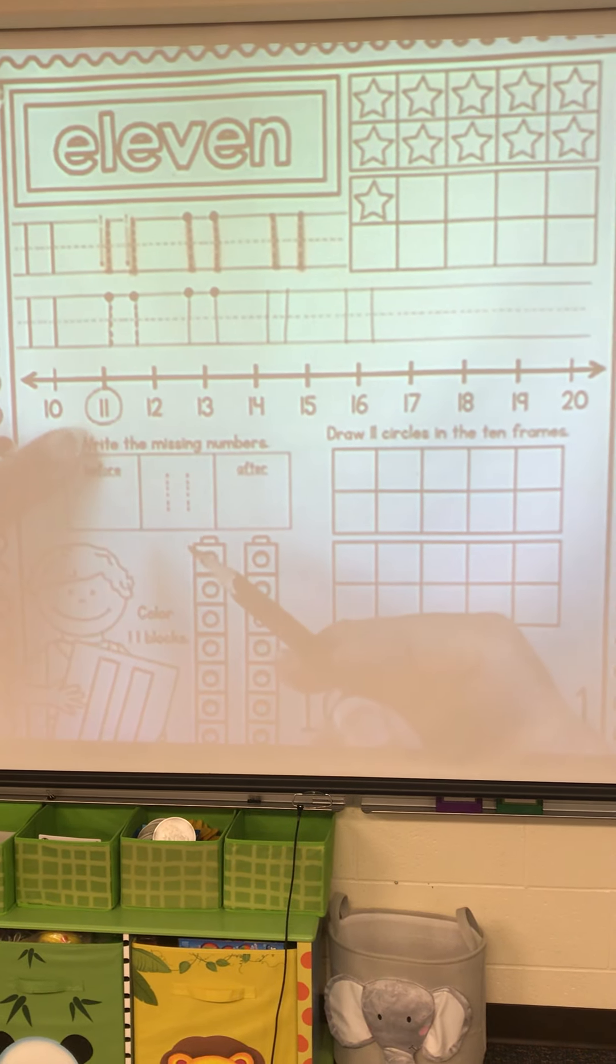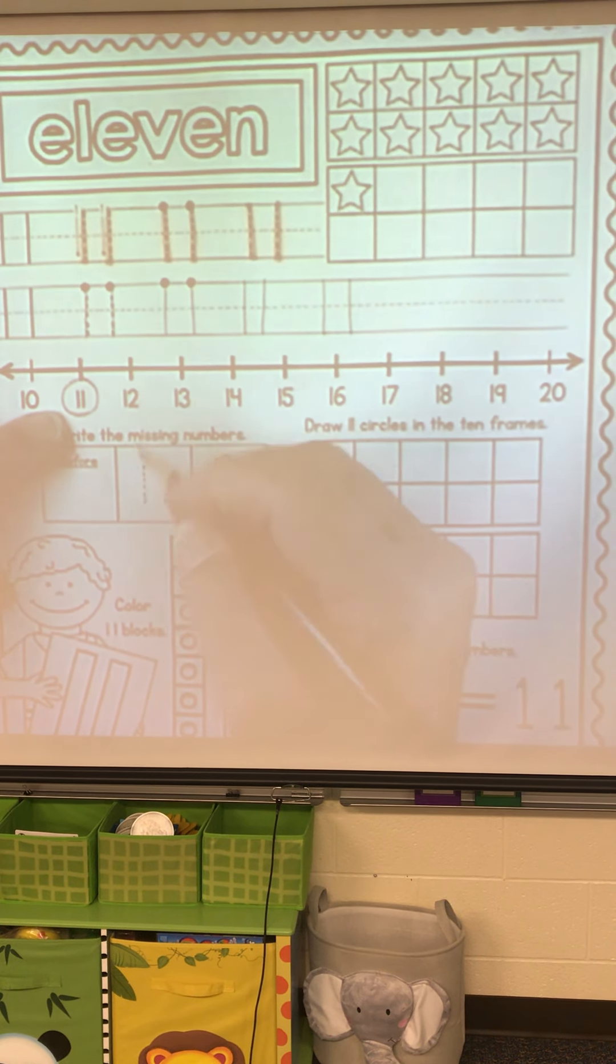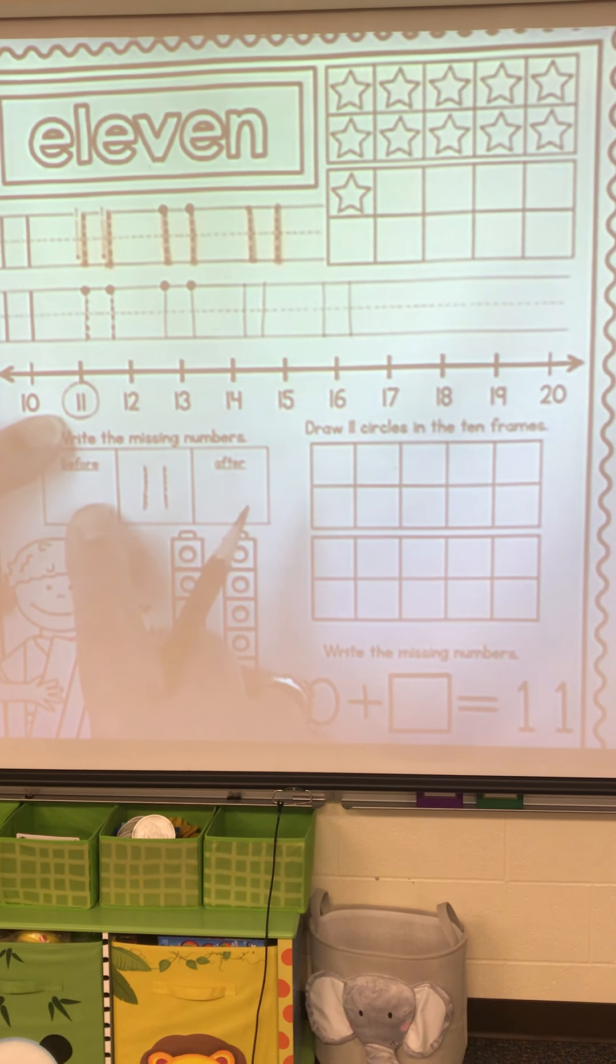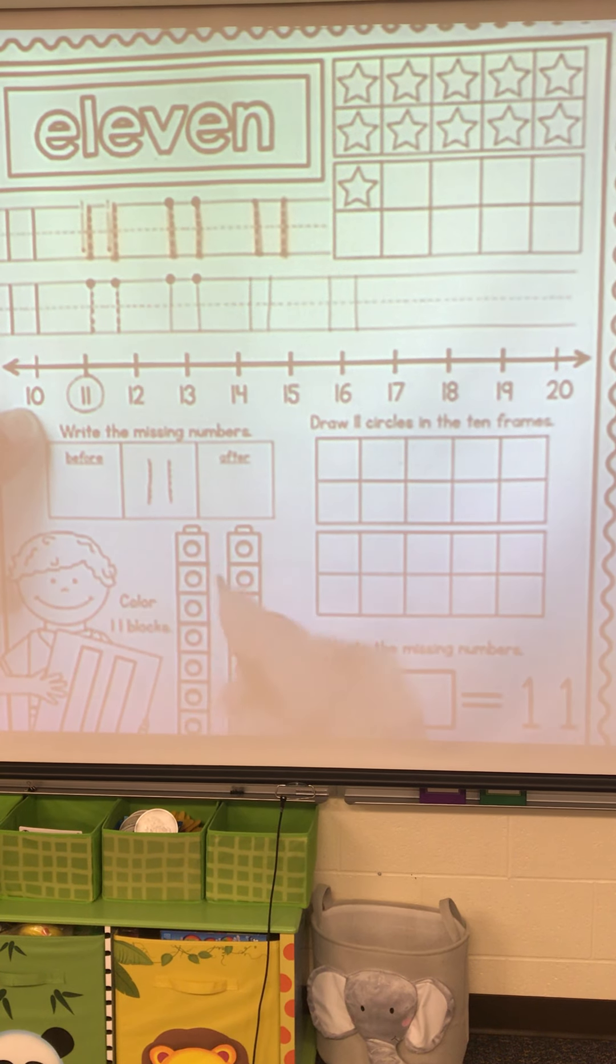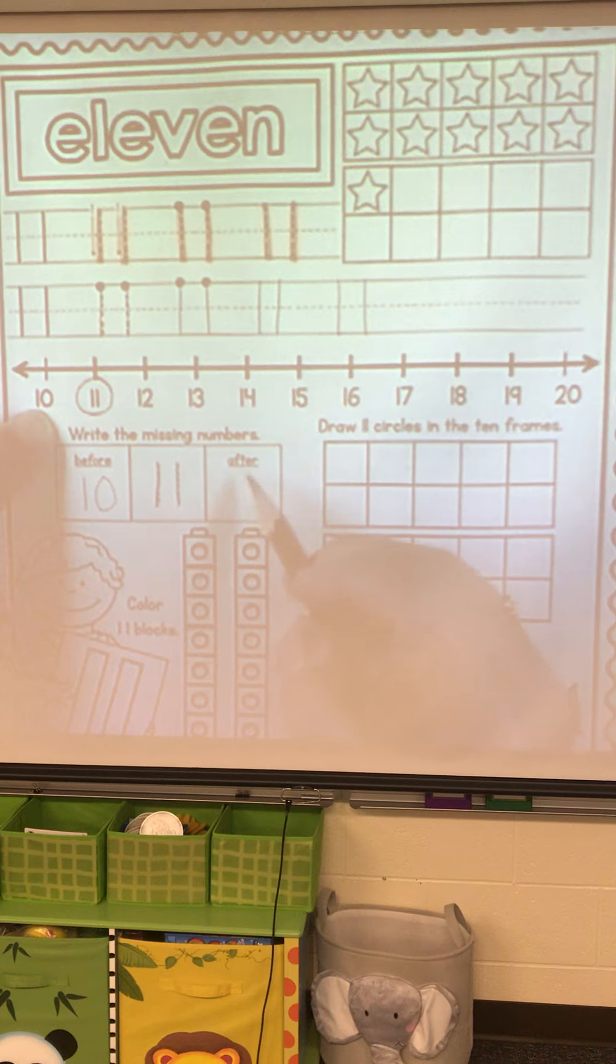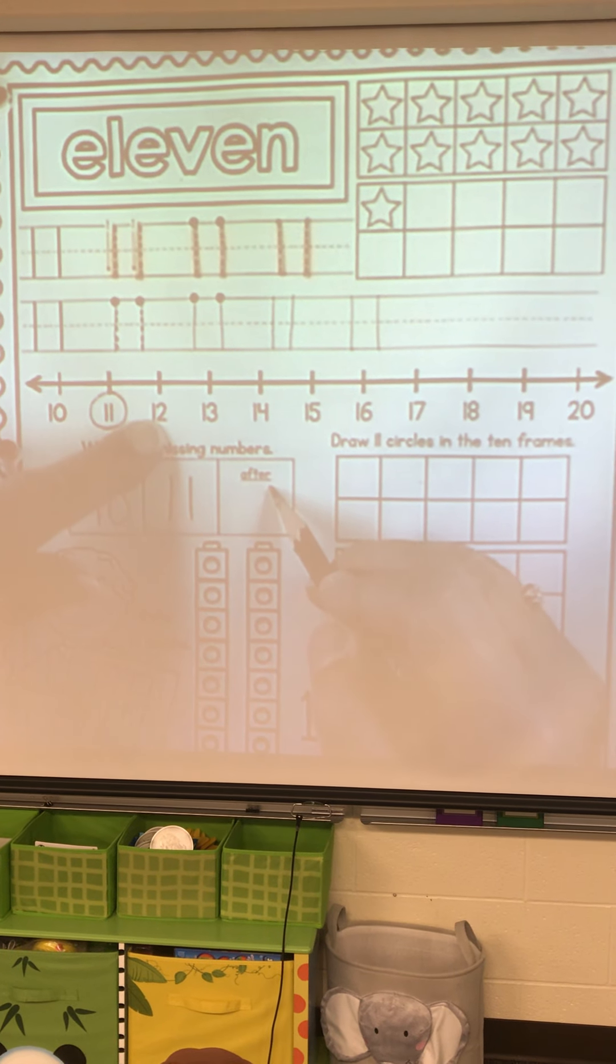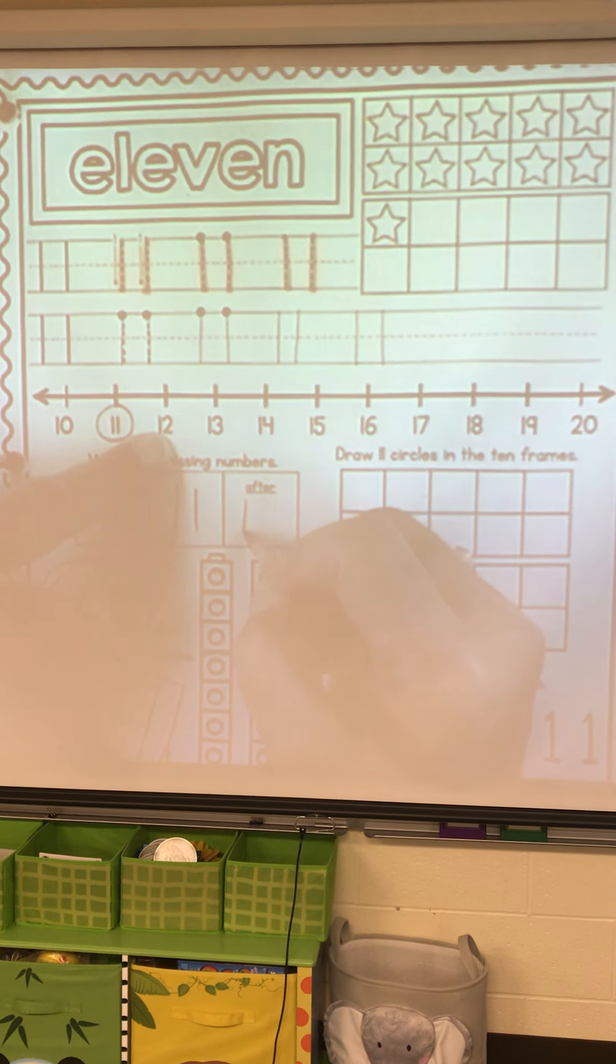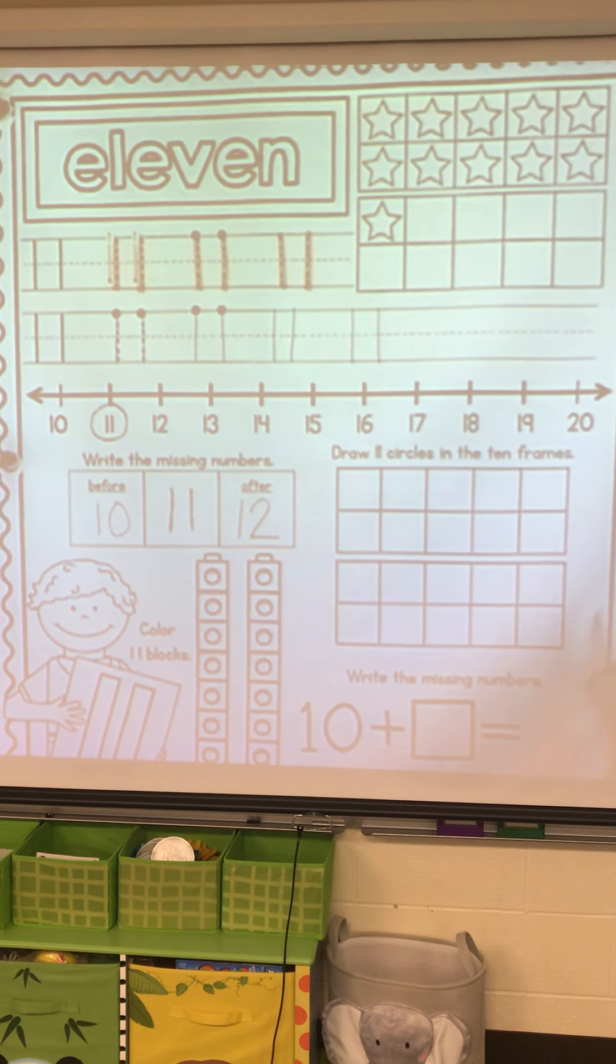Now, if we look at the number line, here's 11. Trace the 11. What comes before 11? 10. What comes after 11? 12. A 1 and a 2.